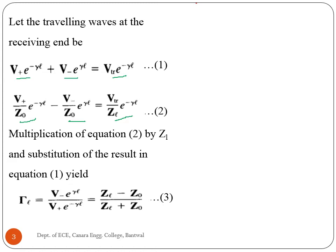We will get the reflection coefficient at the load end by multiplying Z_L to equation 2 and substituting the result into equation 1. This shows how we derive the reflection coefficient.